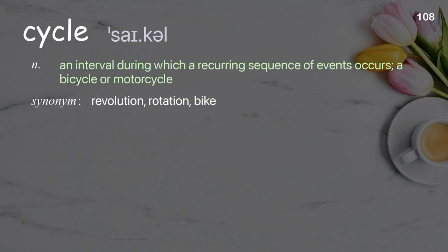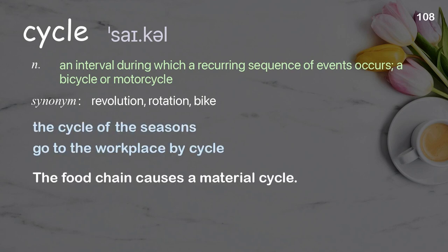Cycle: an interval during which a recurring sequence of events occurs; also a bicycle or motorcycle. Examples: the cycle of the seasons, go to the workplace by cycle. The food chain causes a material cycle.